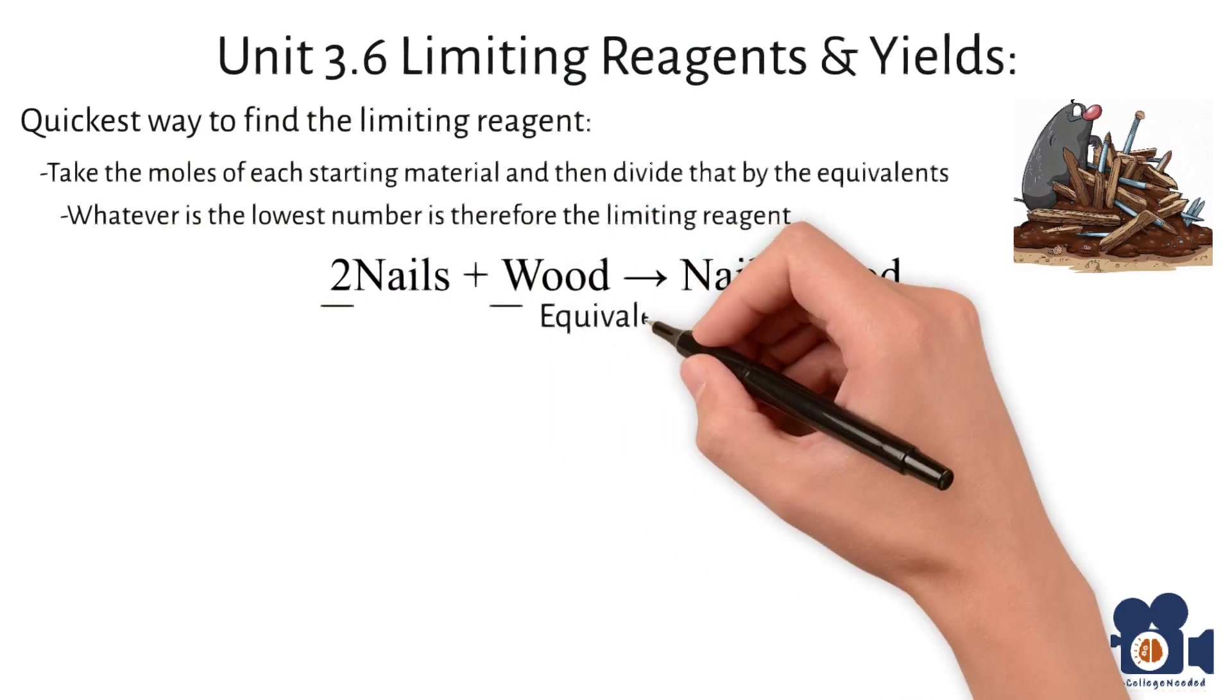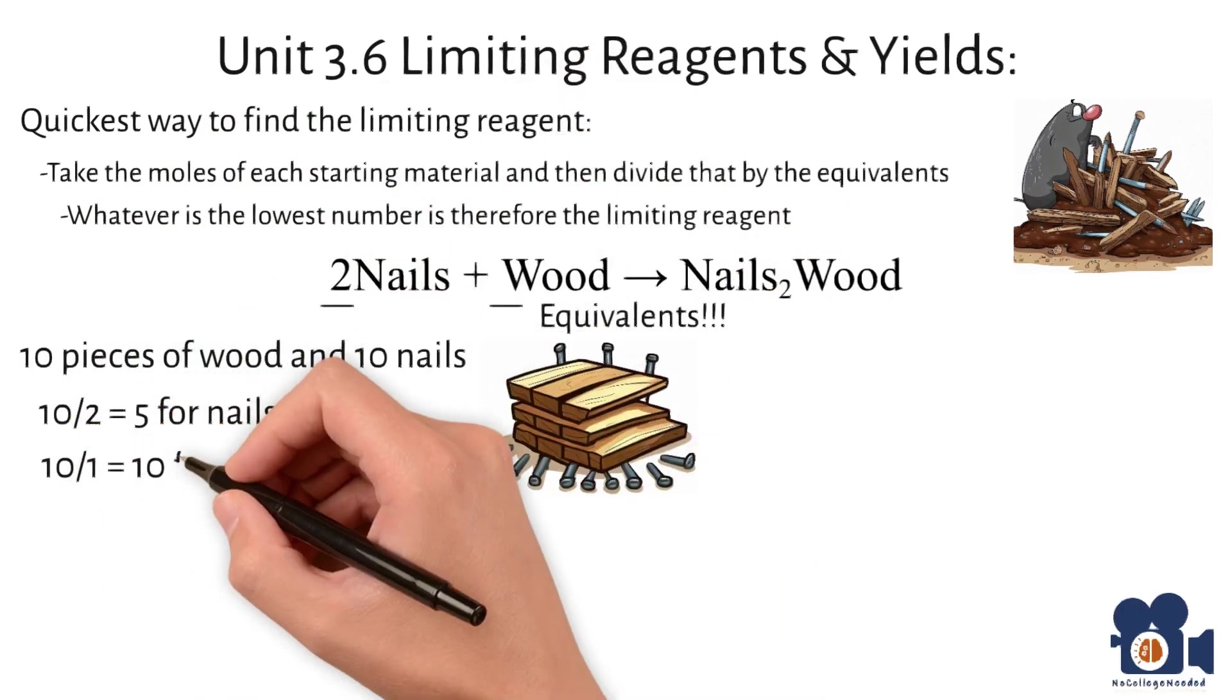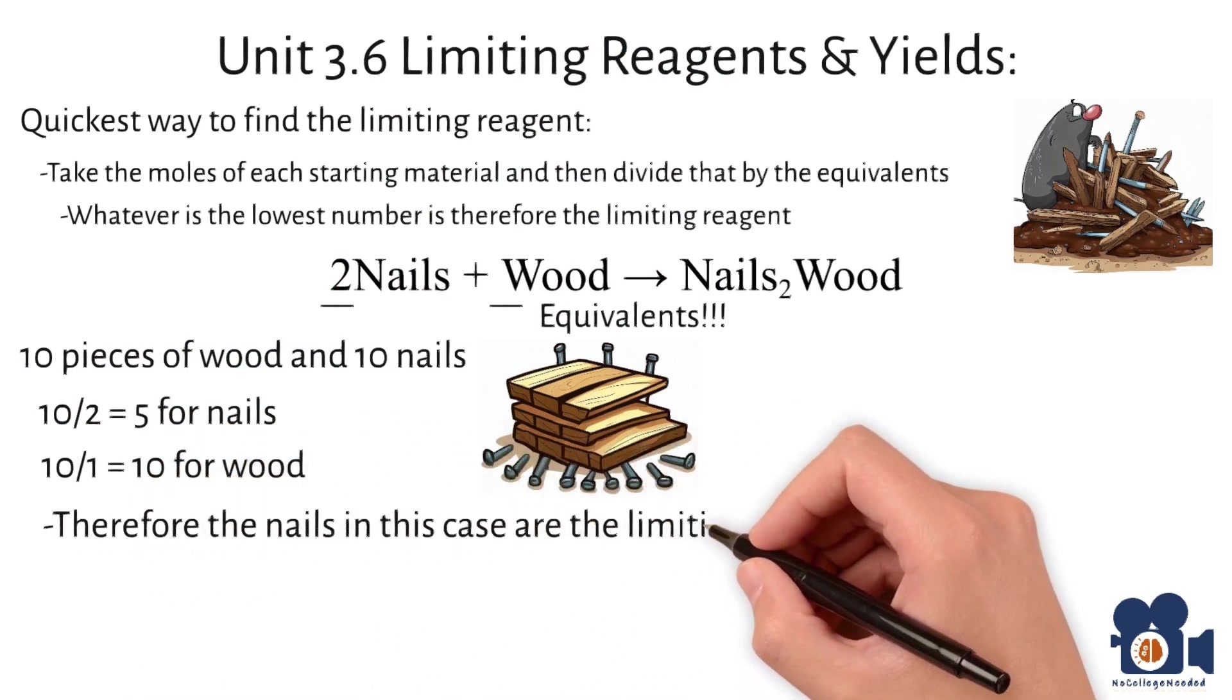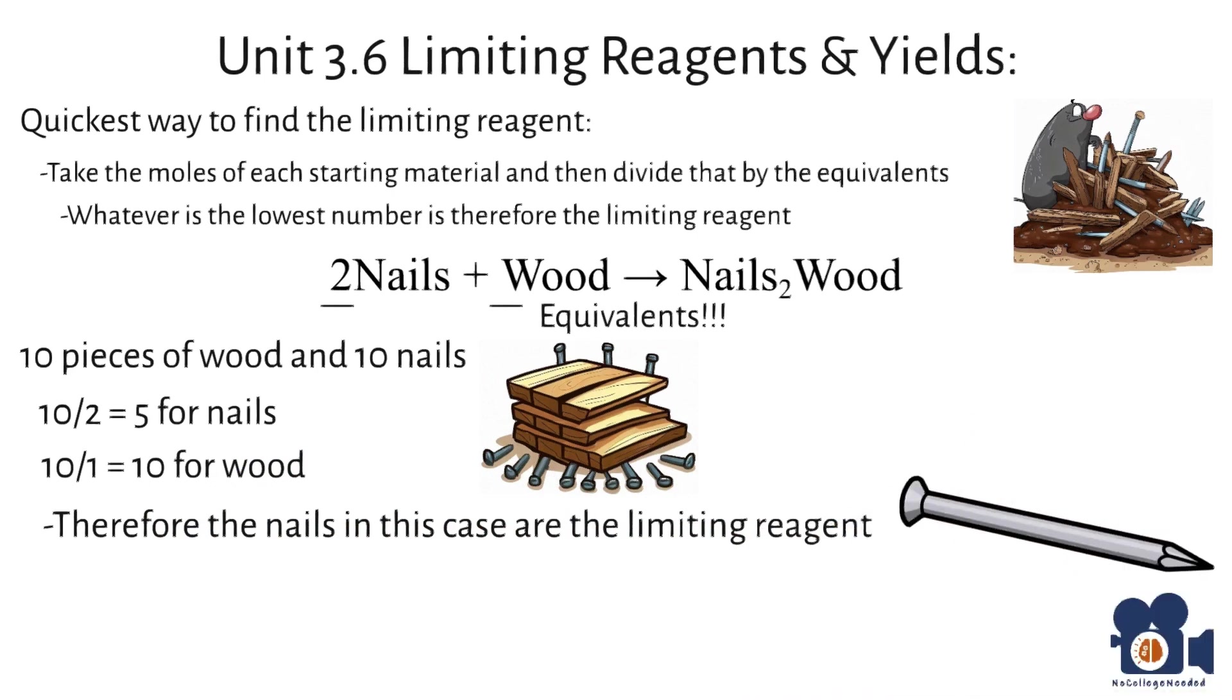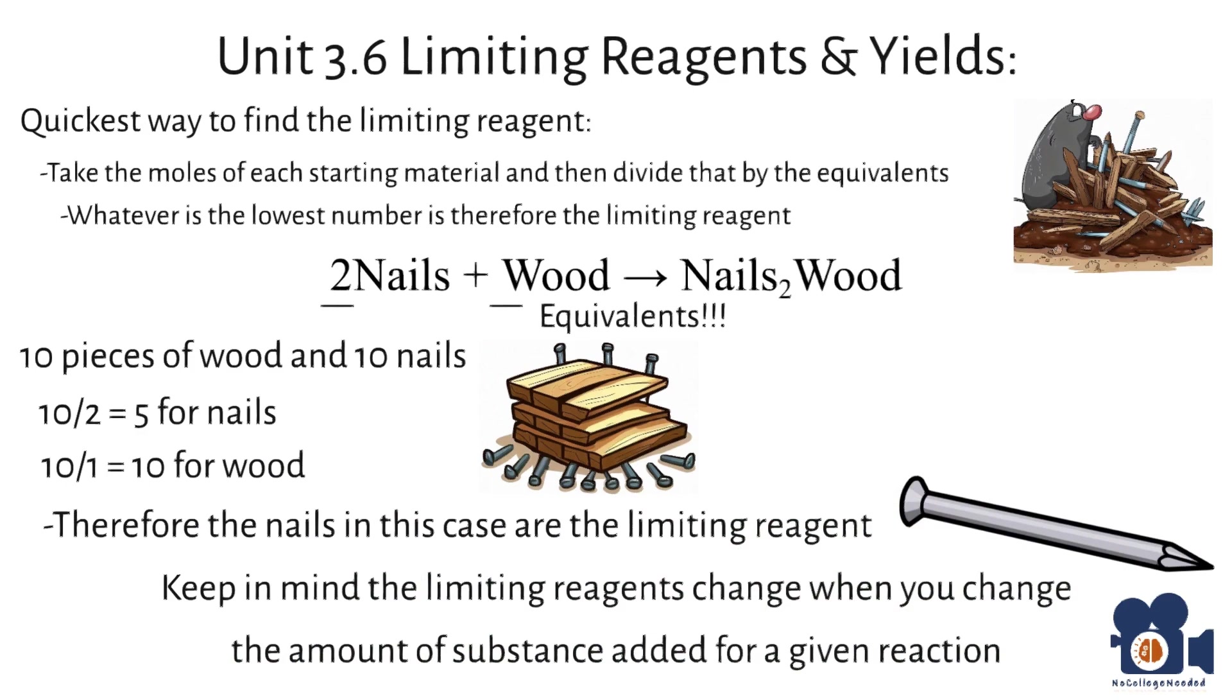In our example, there are two equivalents of nails to one equivalent of wood. 10 divided by each of those gives five nails to 10 wood. Therefore, the nails in this case are the limiting reagent. Keep in mind that the limiting reagents change when you change the amount of substance for a given reaction.